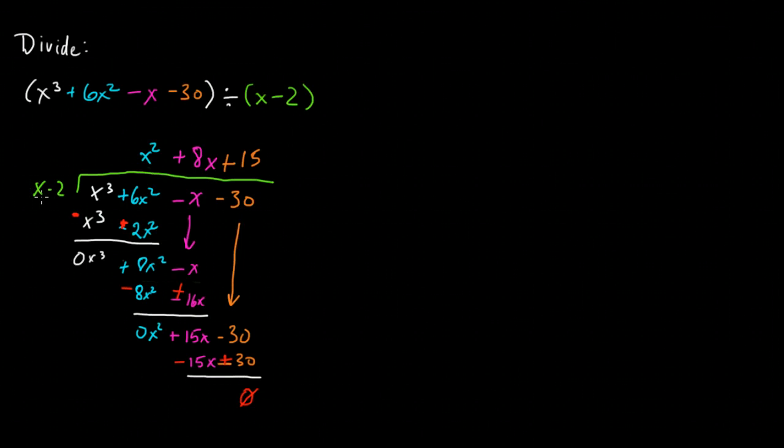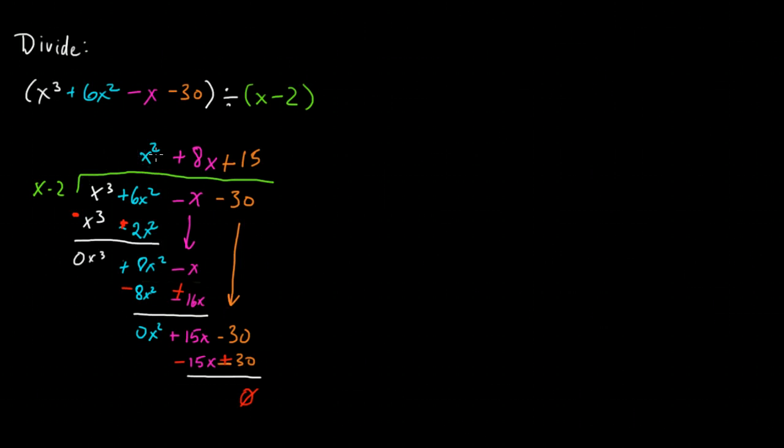you want to find out what times x will give you x to the third power. It's x squared. That's the divide part. Step 2 is multiply, so you take x squared, multiply it in to both terms, and you get x to the third power minus 2x squared.